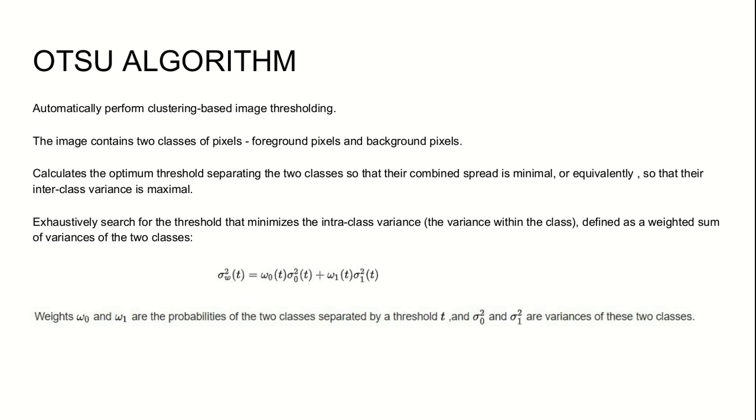The first step is we are computing the histogram and probability of each initial level. Then we are setting up the initial probability and mean as 0. Then for all possible thresholds, from t equals 1 to maximum threshold, we are updating the probability and mean. Then we are computing the variance. So this computed variance is then set as the desired threshold.